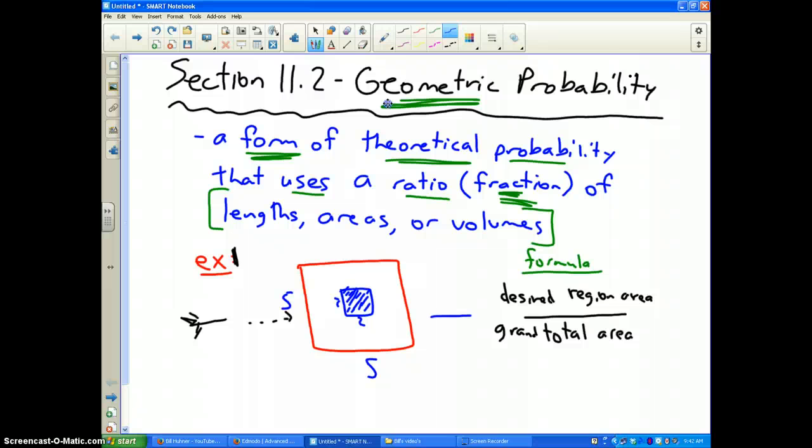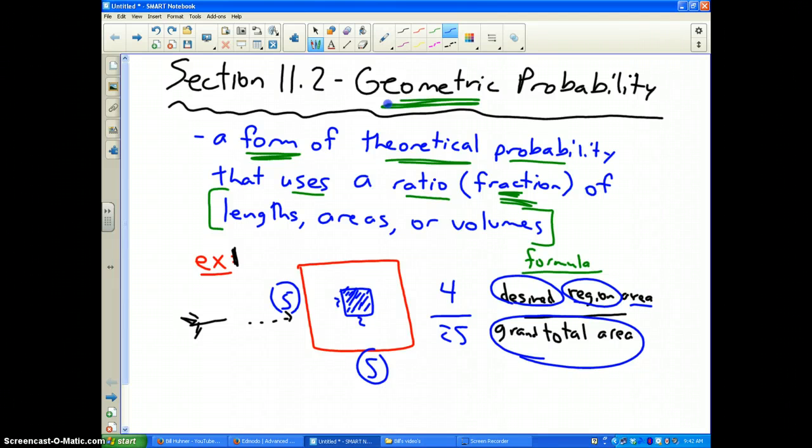Well, the blue shaded region is my desired region, so I've got to find its area. Very simply, 2 times 2, which is 4, over the grand total area, which is the red square, which would be 5 times 5, which is 25. The probability that my dart randomly lands in that blue area is 4/25, which is approximately a 16% chance.